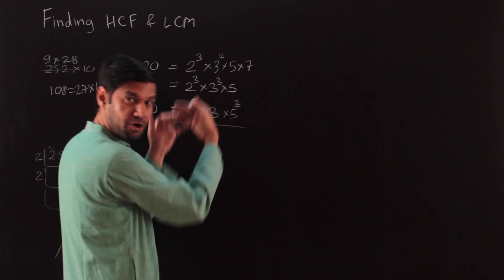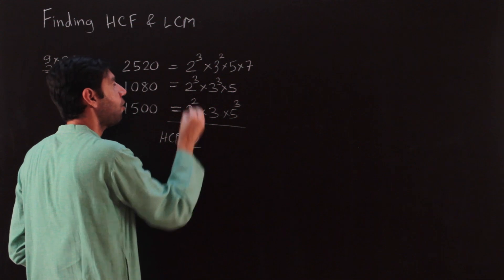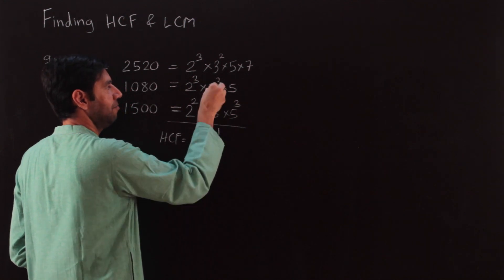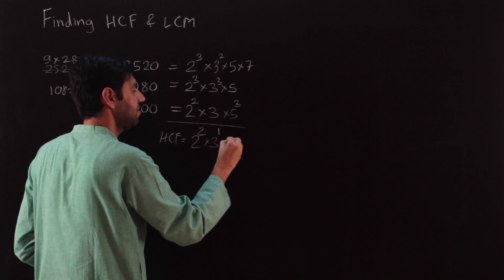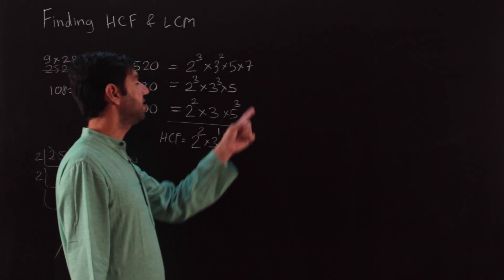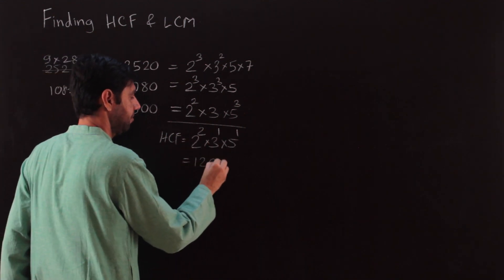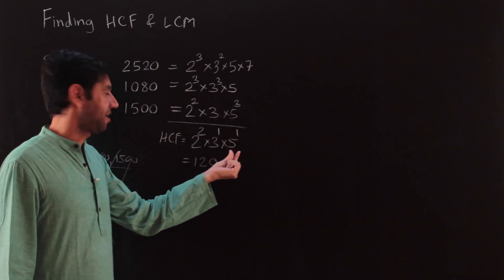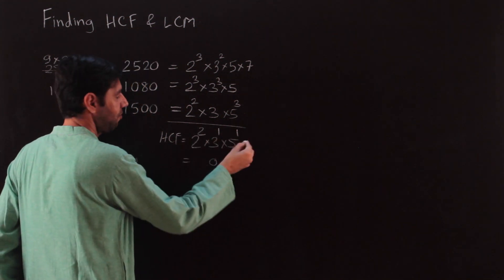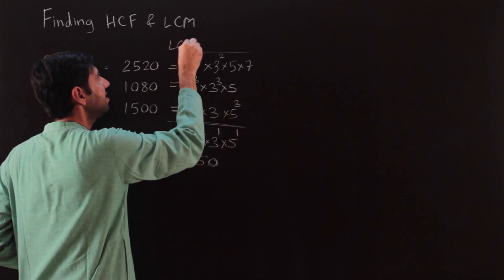For the HCF, think of it as the denominator factor — it must divide all numbers. For 2: 2² divides all three. For 3: only 3¹ divides all (since 1500 has only 3¹). For 5: only 5¹ divides all. The 7 is not present in the second and third numbers, so it's excluded. HCF = 2² × 3 × 5 = 4×3×5 = 60.